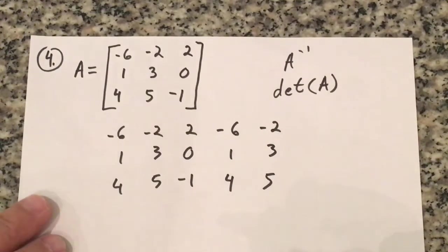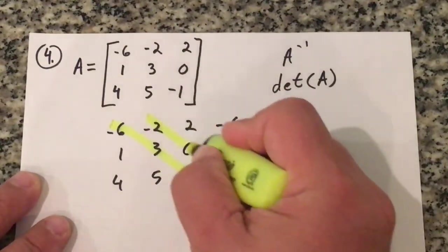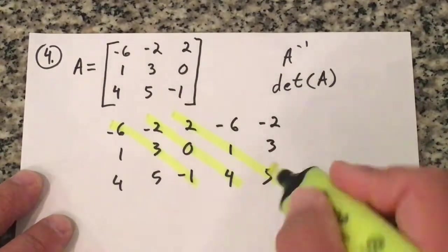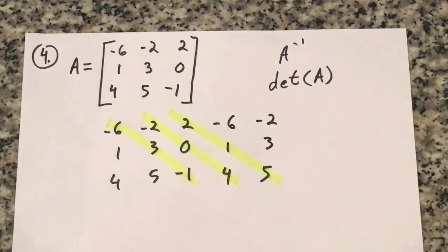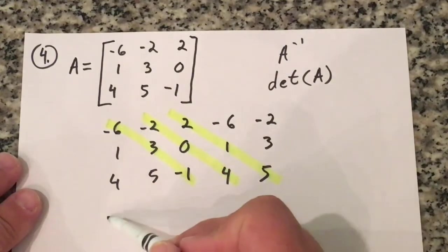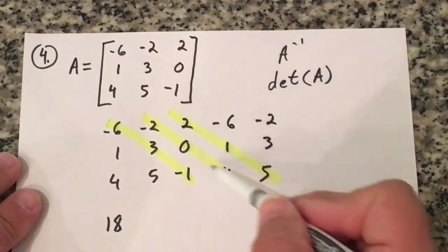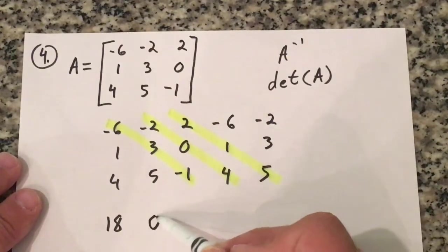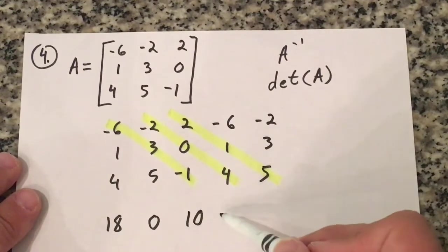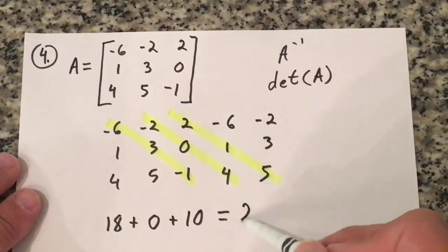Now I'm going to multiply these on the diagonal. Negative 6 times 3 times negative 1 is 18. Negative 2 times 0 times 4 is 0. 2 times 1 is 2, times 5 is 10. I add them up and that equals 28.